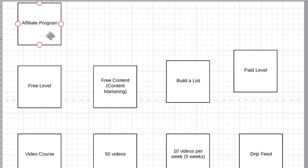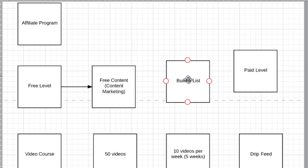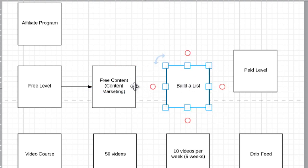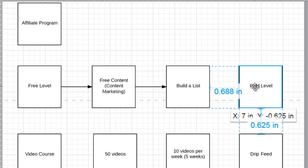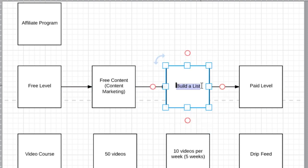Let's put this in order. From the free level with free content, we are going to build a list. Then from the list we are going to use the autoresponder system to sell the course. You're basically providing as much value as possible to get them into the paid level. At this point we need to move things around and reorganize them so that it makes sense as a step-by-step process.